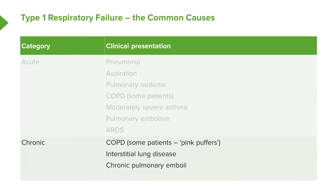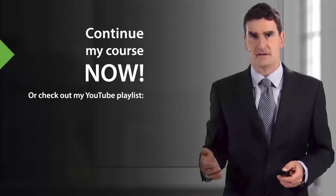Chronically, patients can have type 1 respiratory failure due to interstitial lung disease if it's severe enough. If they've had chronic pulmonary emboli leading to significant pulmonary artery damage they'll have type 1 respiratory failure, as will patients with severe pulmonary hypertension. Probably the commonest cause is COPD, but only in some patients — specifically the emphysematous pink puffer-type phenotype.